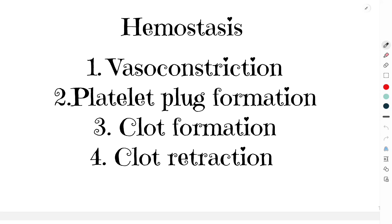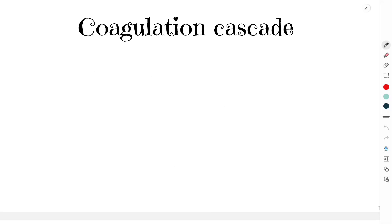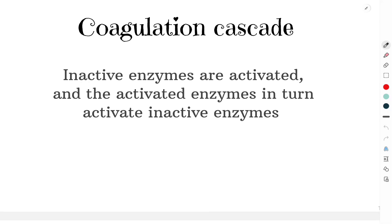Coagulation is called the coagulation cascade because in this process, inactive enzymes are activated, and the activated enzymes in turn activate other inactive enzymes. This process keeps occurring until there is formation of the clot.